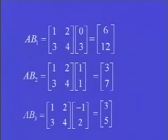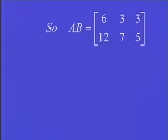Those are the individual columns now of my matrix AB. So putting that all together, AB is going to be first column 6, 12, second column 3, 7, third column 3, 5.